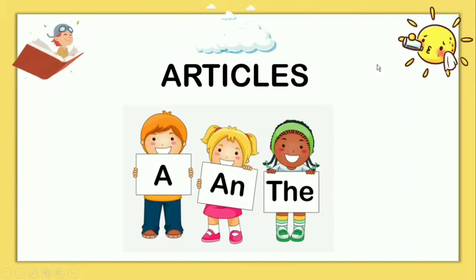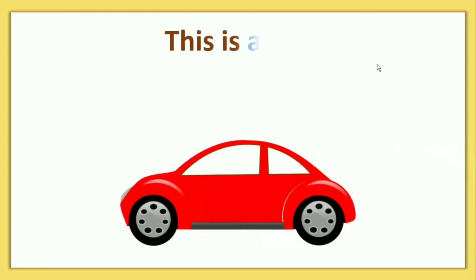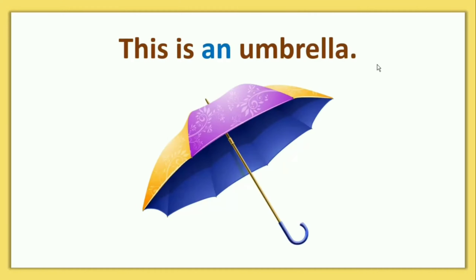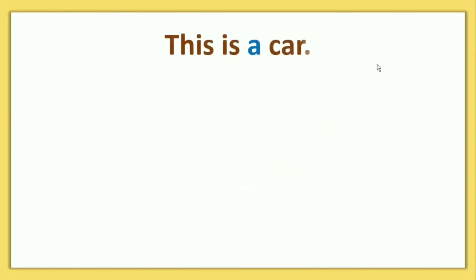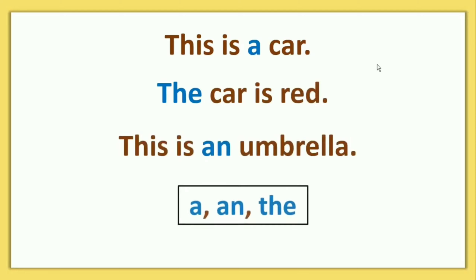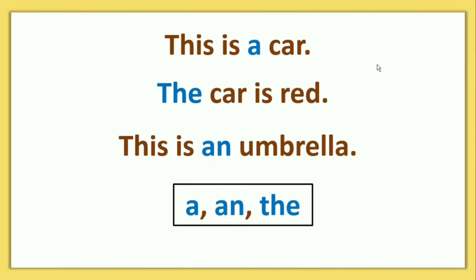Hello children, today's topic is articles. A and AN are the articles. See, this is a car — the car is red. This is an umbrella. In sentences you can see A and AN. We will show you the articles.